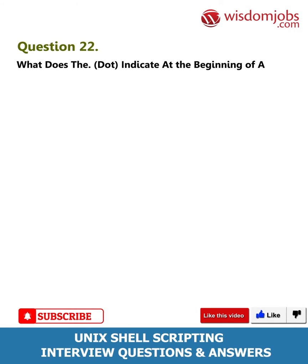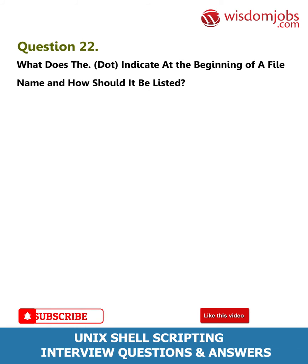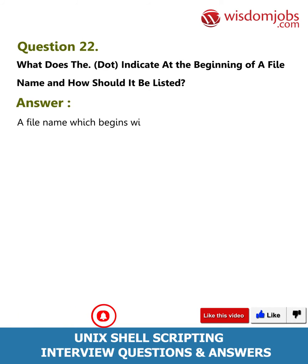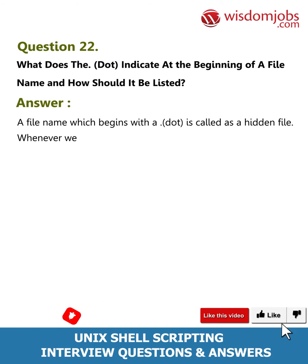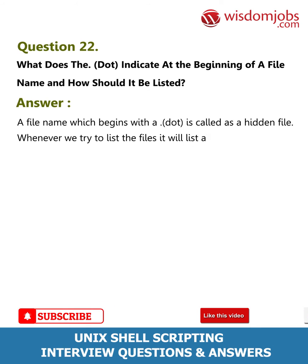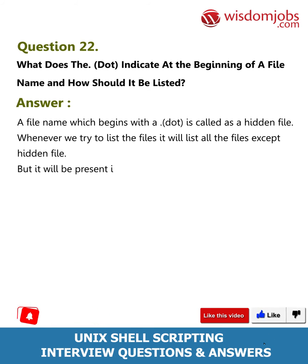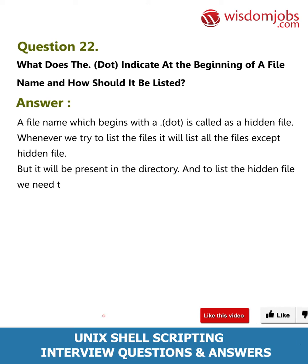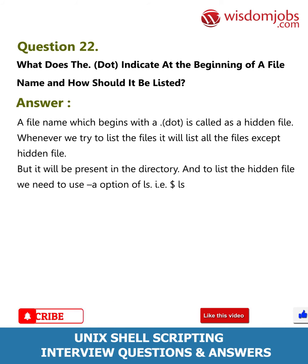Question 22: What does the dot indicate at the beginning of a file name and how should it be listed? Answer: A file whose name begins with a dot is called a hidden file. When we try to list files, it will list all files except hidden files. However, the hidden file is present in the directory, and to list it we need to use the -a option of ls, i.e., 'ls -a'.